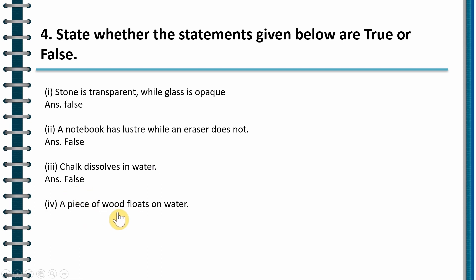Then fourth question, a piece of wood floats on water. The answer is true. Yes. The wood, since the density of wood is less than that of water, it floats.